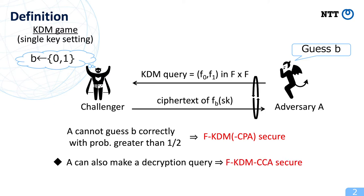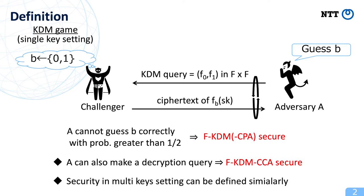We can similarly define F-KDM-CCA-secure by allowing the adversary to make decryption queries. The definition just explained is KDM security in single-key setting. We can similarly define KDM security in multi-key setting by considering a security game where there are multiple secret keys.